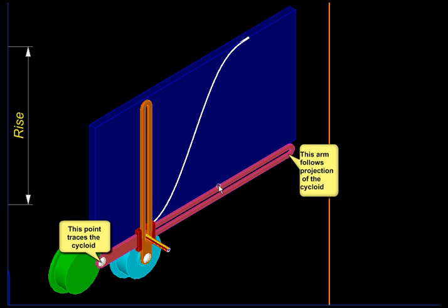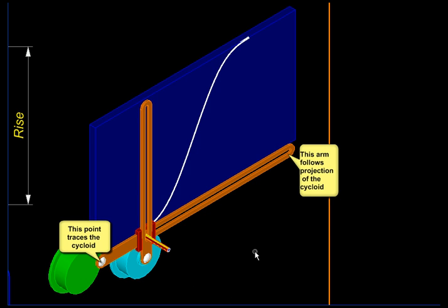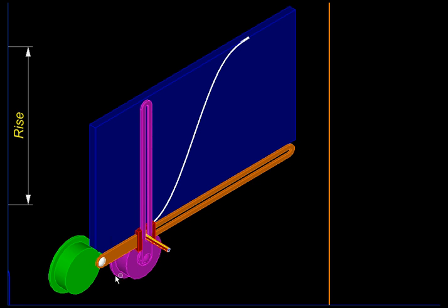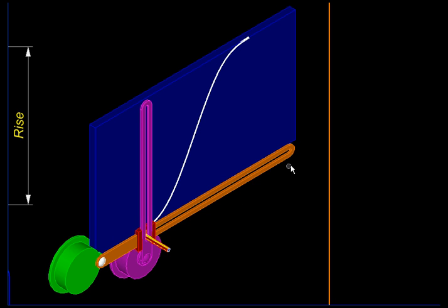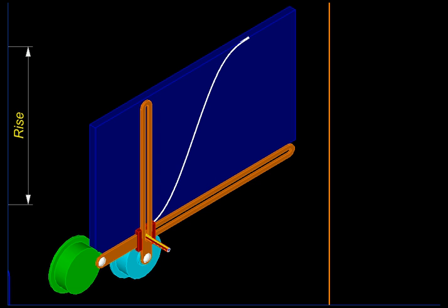Then we have another slotted link here which will be moving in the horizontal direction uniformly. Wherever these two slotted links intersect, through that point we have placed this pencil, so it will be moving on the board. Let us see what kind of curve it traces.